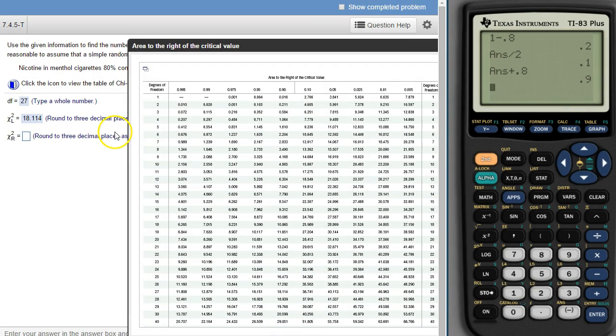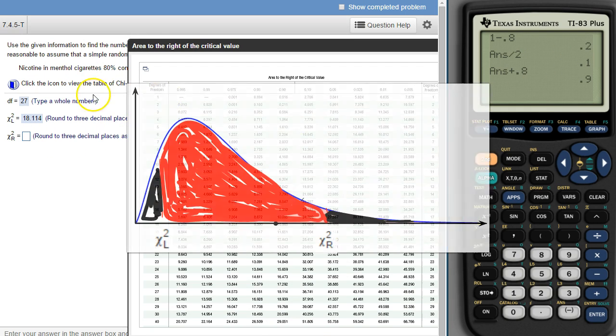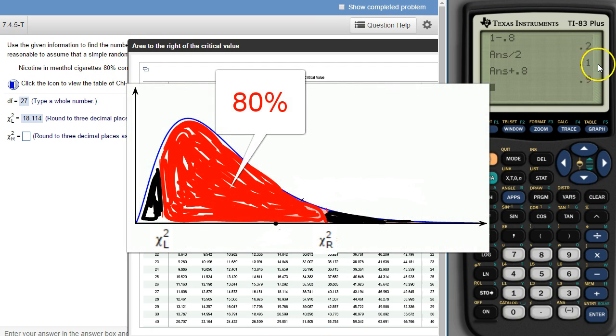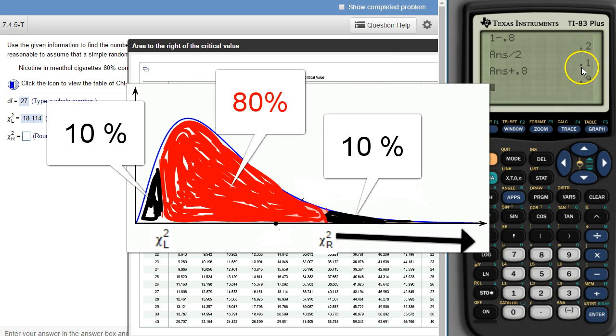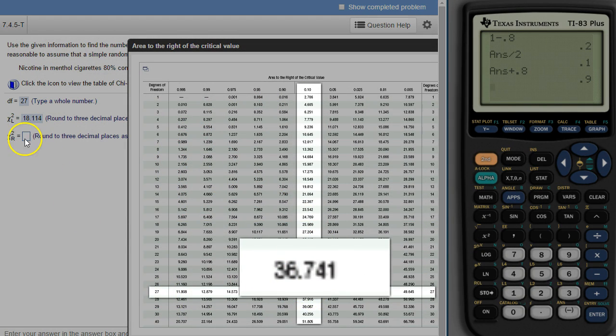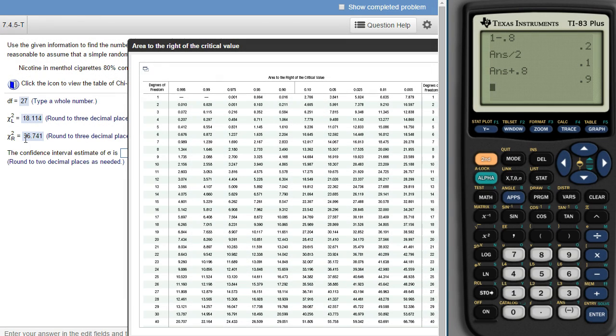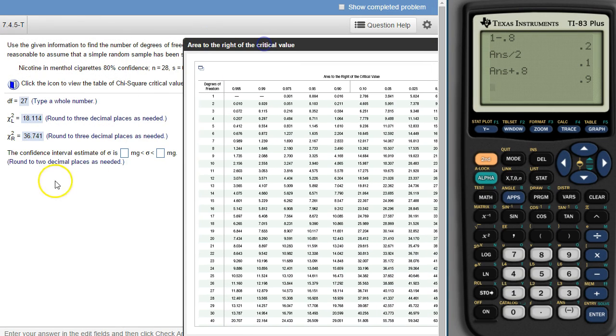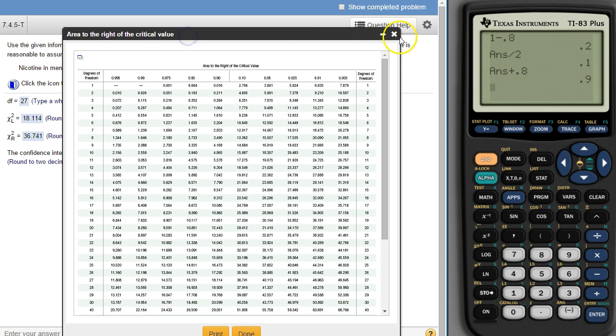And then to the right, if it's 80 percent, to the right is just that. Once we divide that by two, that's the area to the right, so 0.1 is to the right. So there's 0.1, 27, it is 36.741. Now the estimate of the lower and upper bounds for the population standard deviation, that's where that formula comes in.